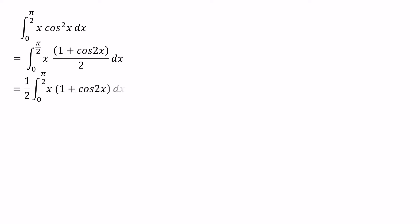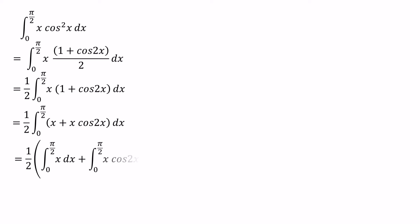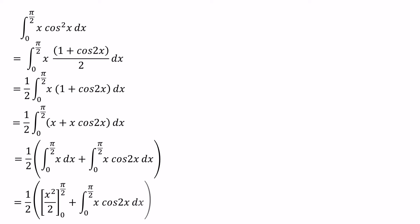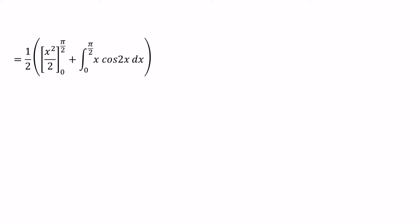Now we can remove the brackets. Then we have integral of x plus x cos 2x. We can consider each integral side separately: integral of x plus integral of x cos 2x. The integral of x value we can write as x squared over 2. To simplify the integral of x cos 2x, we can use the integration by parts method.